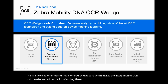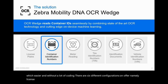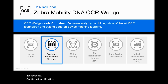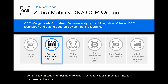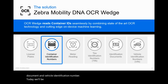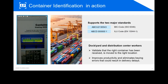There are six different configurations on offer: namely license plates, container identification number, meter reading, tire identification number, identification document, and vehicle identification number. Today we will be discussing container identification number.